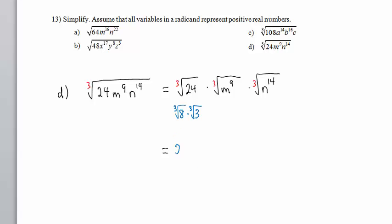So we have 2, which is the cube root of 8, times the cube root of 3. Then we have m raised to the power 9, divided by root number 3. This gives us m to the 3rd power.